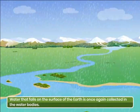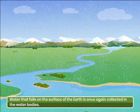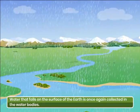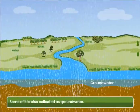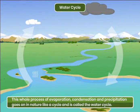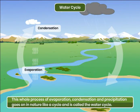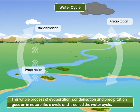Water that falls on the surface of the earth is once again collected in the water bodies. Some of it is also collected as ground water. This whole process of evaporation, condensation and precipitation goes on in nature like a cycle and is called the water cycle.